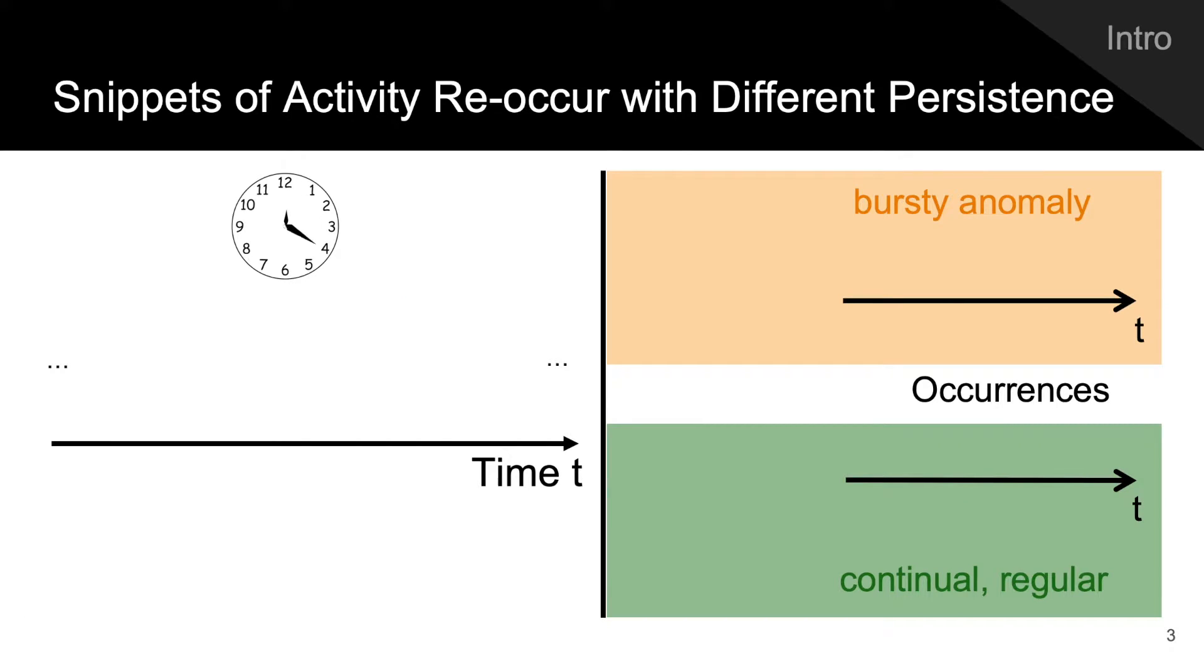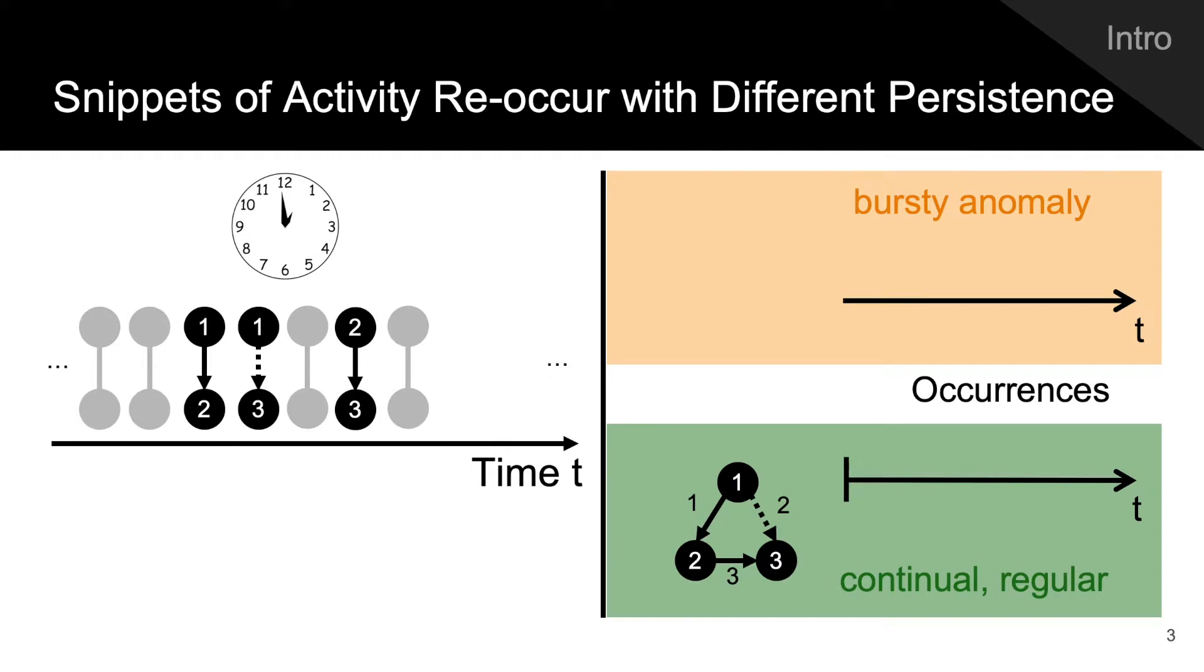Some patterns may have a large number of occurrences but only last for a short time, making a bursty anomaly falsely appear to be an intrinsic characteristic of a dynamic network. At the same time, there may be important activity in the network that has low overall frequency but that occurs continually and regularly, such as commute routes or a stealthy computer network attack.